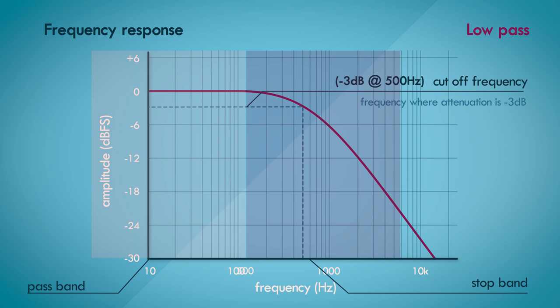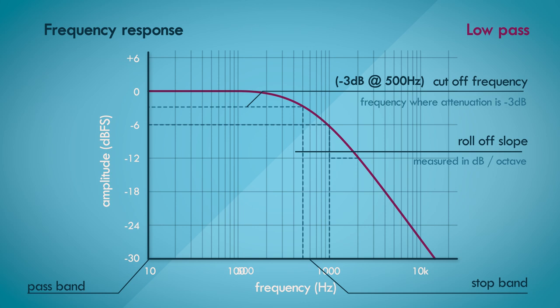In this plot, the rolloff slope is gradual. The slope of the rolloff is measured in decibels per octave, meaning how many decibels of attenuation happens in each octave in the stop band. In this plot, we can see that at 1kHz, which is one octave above our cutoff frequency of 500Hz, we can see that the total attenuation is negative 6dB. And at 2kHz, which is another octave up, it's negative 12dB. So we can characterize the rolloff for this filter as negative 6dB per octave.